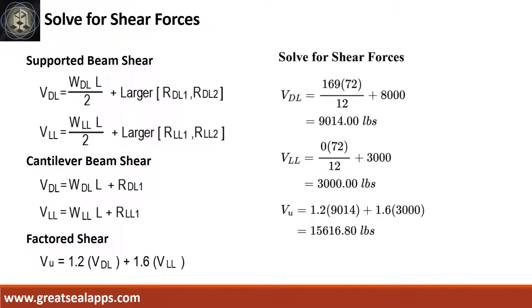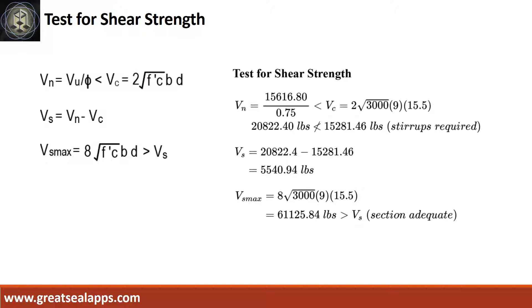The shear force for dead load is 9,014 pounds. The shear force for live load is 3,000 pounds, for a maximum shear force of 15,616.8 pounds. The nominal shear force is 20,822.4 pounds, greater than 15,281.46 pounds concrete capacity. The shear force capacity in stirrup is 5,540.94 pounds, less than 61,125.84 pounds maximum stirrup capacity.